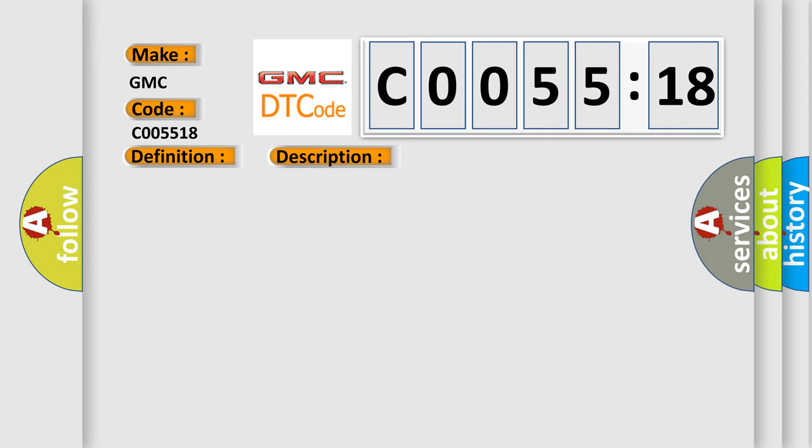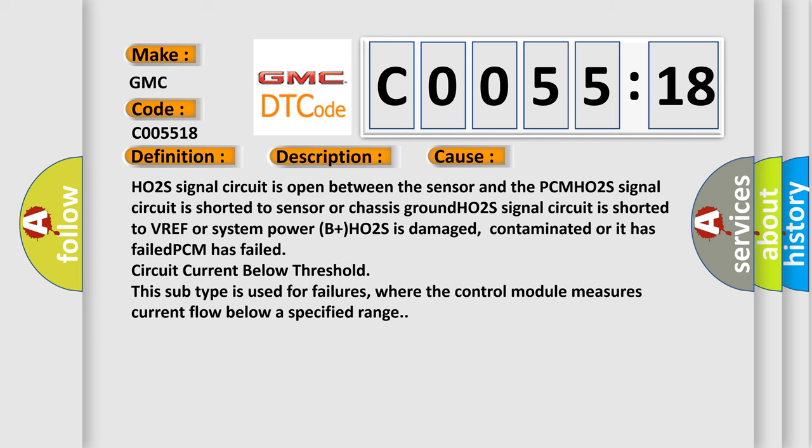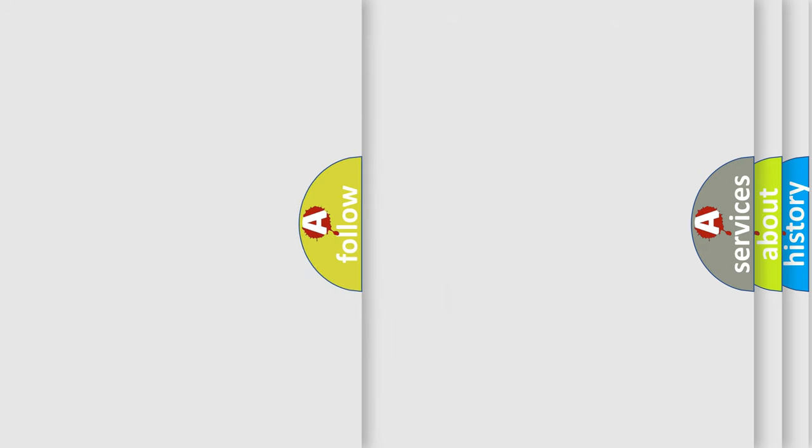This diagnostic error occurs most often in these cases: HO2S signal circuit is open between the sensor and the PCM, HO2S signal circuit is shorted to sensor or chassis ground, HO2S signal circuit is shorted to VREF or system power B+, HO2S is damaged, contaminated or it has failed, PCM has failed, circuit current below threshold. This subtype is used for failures where the control module measures current flow below a specified range.